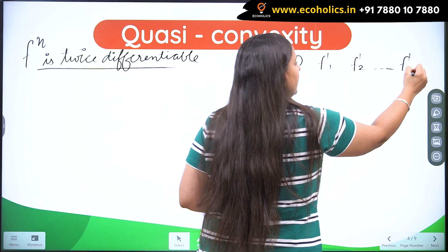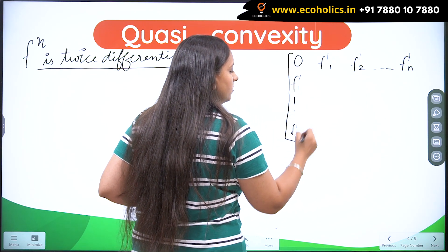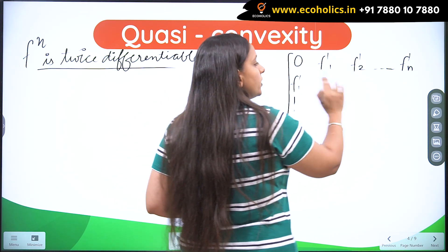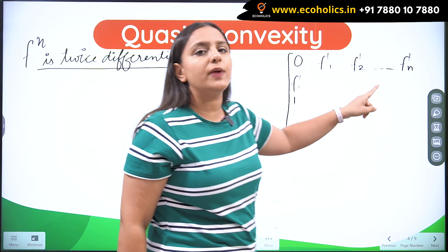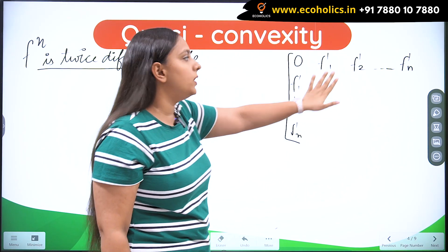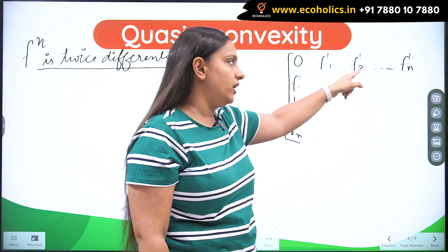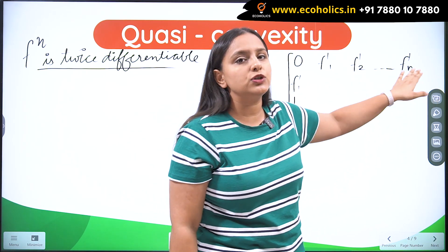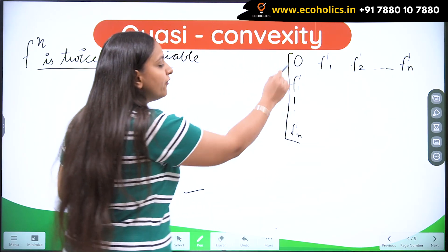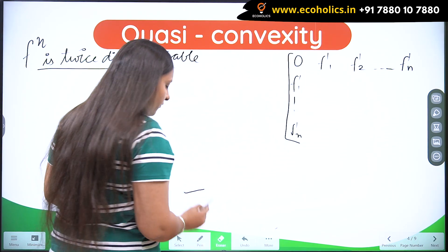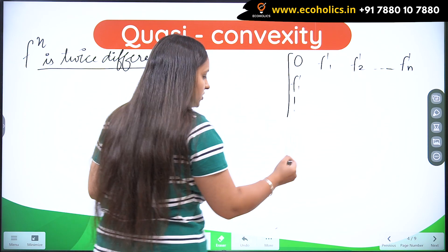Here, f′₁ represents the first-order derivative with respect to the first variable, f′₂ represents the first-order derivative with respect to the second variable, and likewise up to the nth variable. I have filled the same values in the first column as well, so this column runs from f′₁ down to f′ₙ.